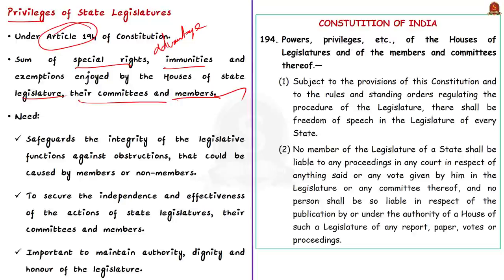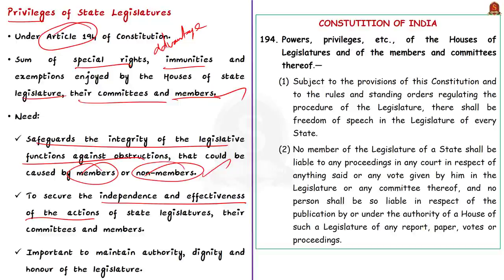Why do legislators need such privileges? They mainly serve to safeguard the integrity of legislative functions without any obstructions — caused by either members themselves or non-members. The privileges also secure the independence and effectiveness of the state legislature, its committees and members. Without these privileges, the houses cannot maintain their authority, dignity, and honor, nor protect members from obstruction in discharging legislative responsibilities.